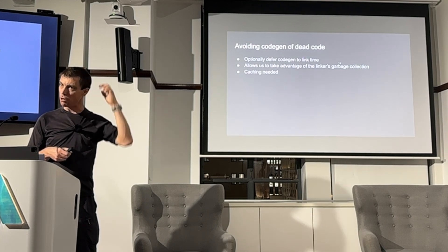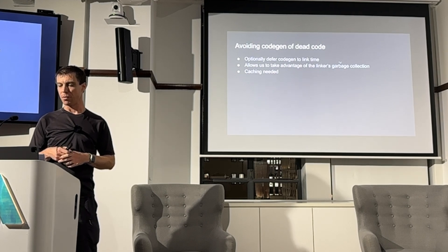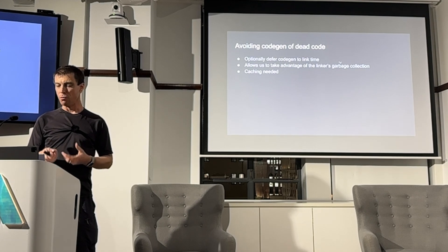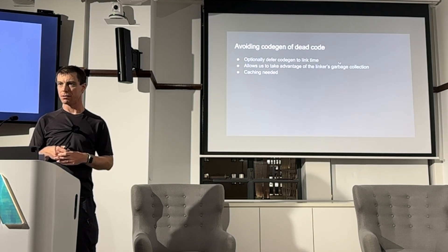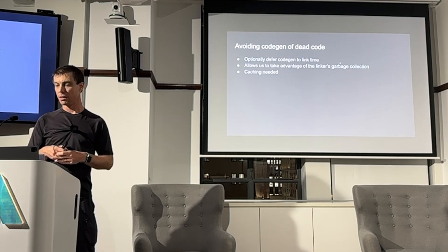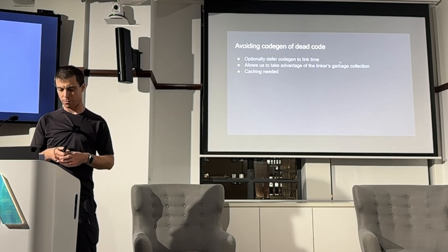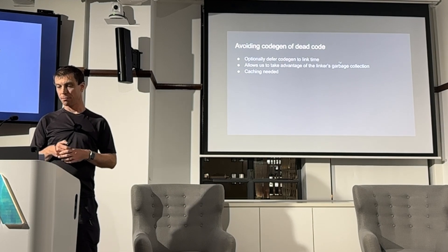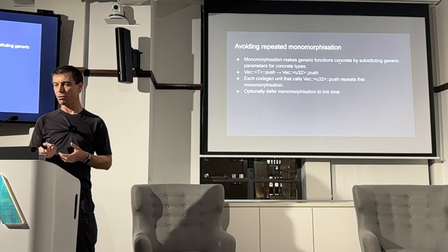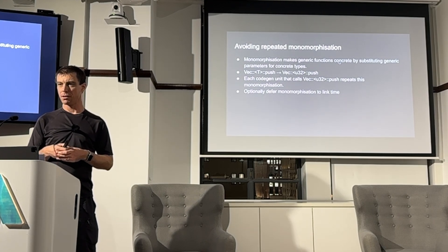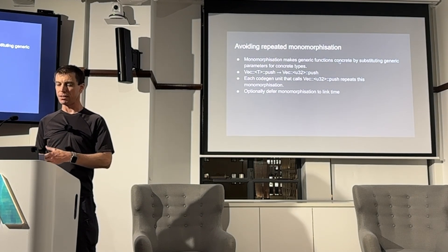Code gen is where the compiler takes your code and emits machine code. It's also where most optimizations happen and one of the more expensive parts of compilation. The idea behind moving it to the linker is that we can take advantage of the linker's garbage collection, which knows which parts of the code are and aren't used, allowing us to avoid doing code gen for code that doesn't actually need to go into the binary. This can be quite significant since you often have dependencies where you're only using part of them — even with feature flags, there are bits that aren't used. Monomorphization is where the compiler takes a generic function and substitutes concrete types — for example, converting Vec<T>::push to Vec<u32>::push. Each code gen unit that calls Vec<u32>::push repeats this monomorphization and the associated code gen. Moving this to link time would ensure that monomorphization and code gen are only done once.